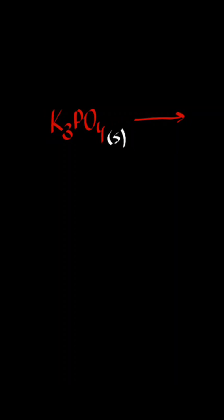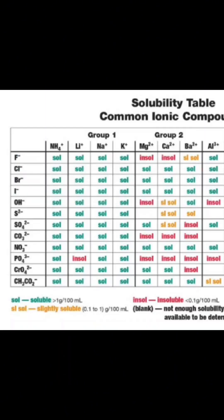and the first thing you want to do is to make sure that your compound is soluble in water, and you do that by checking the solubility table. Find potassium and phosphate ions and just intersect them. Soluble means soluble,